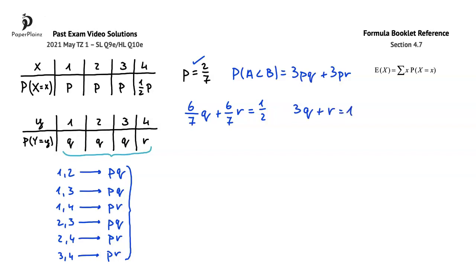What we ended up with are two equations with two unknowns. There are different ways that we can solve this pair of equations. Here, I will use the substitution method and rearrange the second equation to get that R is equal to 1 minus 3Q. Substituting 1 minus 3Q for R in the first equation, we get 6 over 7Q plus 6 over 7 times 1 minus 3Q equals 1 half. Solving this equation gives us that Q is 5 over 24, and substituting this value back into the equation for R and solving, we get that R is 9 over 24, which we can also write as 3 over 8.